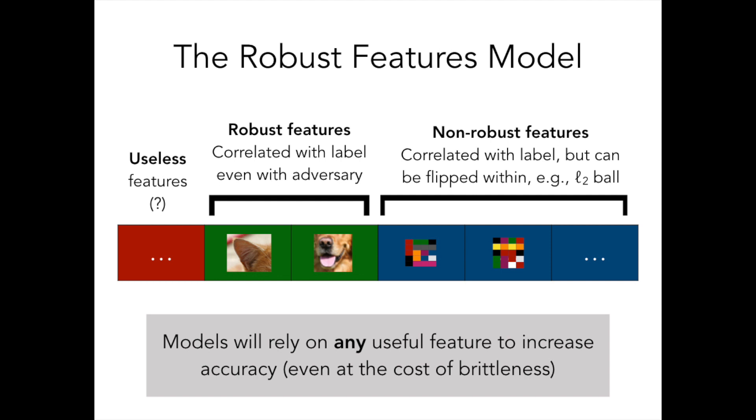This leads us to predict the existence of non-robust features. These are features that are actually indicative of the true label, but can be easily manipulated by an adversary.